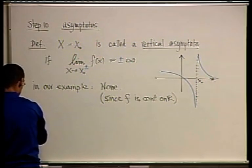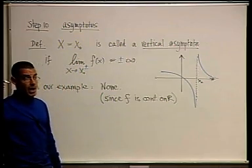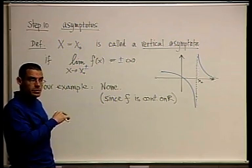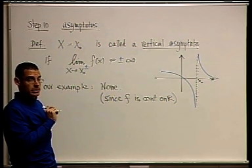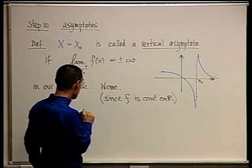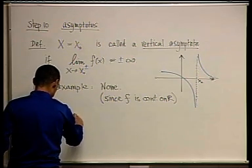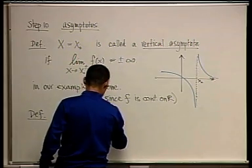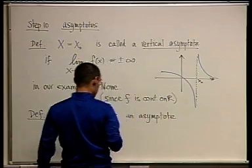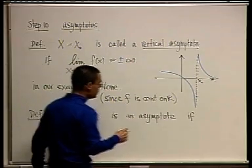Now let's define a linear asymptote of the form y equals ax plus b. y equals ax plus b is called an oblique or linear asymptote if the function approaches that line at infinity or at minus infinity. We want to encode the phenomenon where f approaches this line as x goes to infinity.